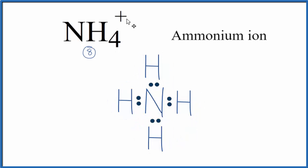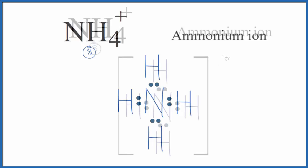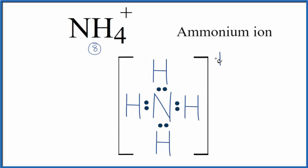Since it's an ion though, we need to put brackets around our Lewis structure. And then we'll put a positive sign outside. So this is a 1 plus ionic charge. So this is the Lewis structure for the ammonium ion.